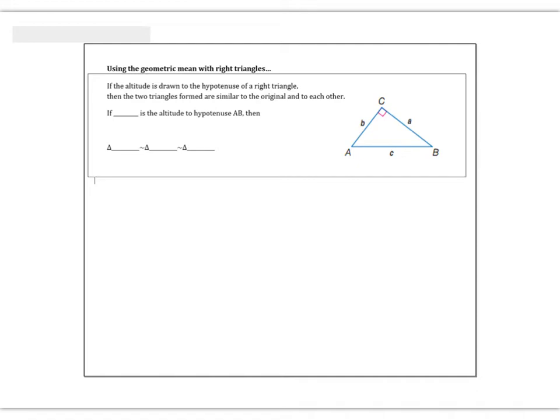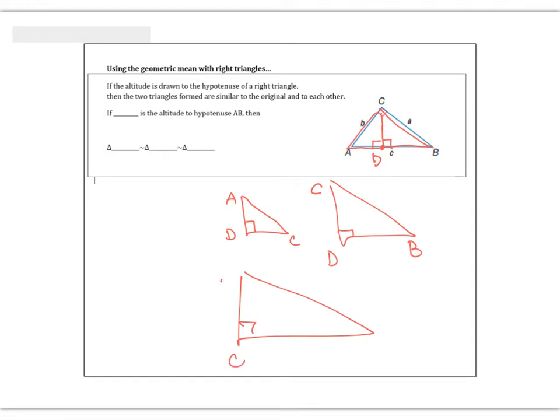If the altitude is drawn to the hypotenuse of a right triangle, then the two triangles formed are similar to the original and to each other. Imagine dropping down an altitude right here. Let's call this point D. What happens when I draw in that altitude is it splits that original triangle into two smaller triangles. If I take that small triangle on the left and redraw it, it would be triangle ADC. If I take the triangle on the right, the medium triangle, and I redraw it, it would be the exact same shape - similar, just a different size. And then the original big triangle - all three end up being similar to each other. Same shape, just different sizes.